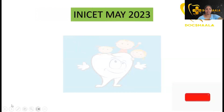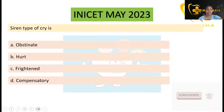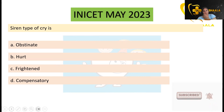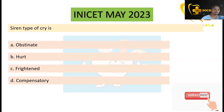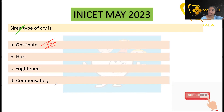Let's look at a question from the recent exam — any set May 2023. The situation described a silent type of cry or a siren type of cry. Whenever you encounter the keyword 'siren,' as we saw in the first slide, it refers to nothing but the obstinate cry. So the answer is obstinate cry.